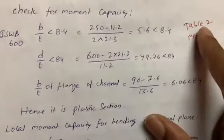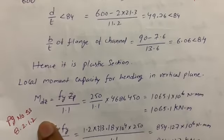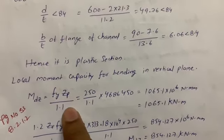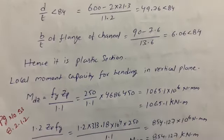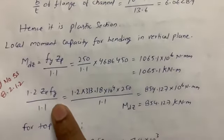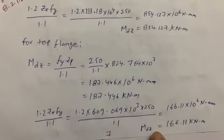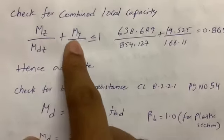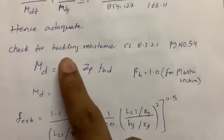Local moment capacity for bending in the vertical plane uses the formula from code clause 8.2.1.2 (page 53): Md = fy × Zp / γm0, where γm0 = 1.1 (from Table 5). This gives Mdz = 1065.1 kN·m. The same formula is applied for the top flange about the YY axis to get Mdy. The combined local capacity check from the code: Mz/Mdz + My/Mdy ≤ 1.0 gives 0.865 < 1 — satisfied.